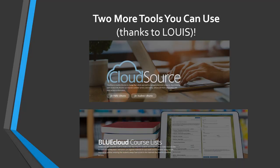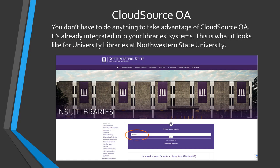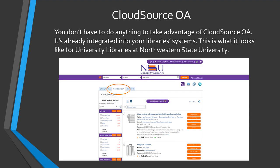Two more tools you can use thanks to Lewis include CloudSource OA and Blue Cloud Course Lists. You don't have to do anything to take advantage of CloudSource OA — it's already integrated into your library systems. This is what it looks like for University Libraries at Northwestern State University, where you can see the main search page with a search for calculus. In the results list, you can see the tab marked CloudSource OA.